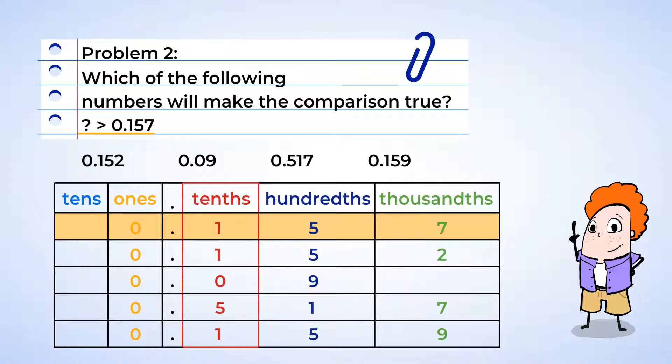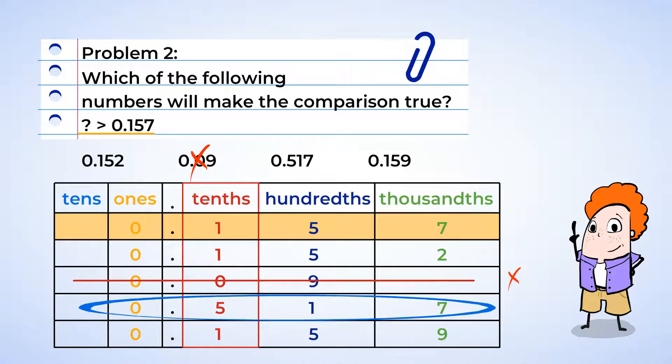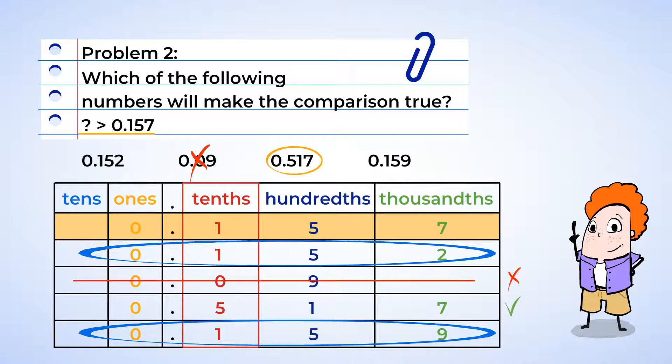Okay, we're looking for any number that has a tenth value greater than one. And so we can definitely cross out the number with a zero in the tenths place. All right, the nine hundredths. Cross that out. Now these two numbers with a one in the tenths place may or may not be greater than one hundred fifty-seven thousandths. This last number has a five in the tenths place, and since five is greater than one, it is greater than one hundred fifty-seven thousandths. So let's circle it. And now let's get back and take a closer look at these two numbers that have a one in the tenths place.